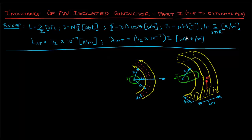Let's do a quick recap of the formulas we've seen so far. We've defined magnetic field H as equal to I over 2πr, where I is the current and r is the distance from the conductor. B, the field intensity, equals μ times H, where μ is the permeability. We've defined magnetic flux as B·A·cosθ, where A is the surface area and θ is the angle the normal of the surface makes with the flux lines.